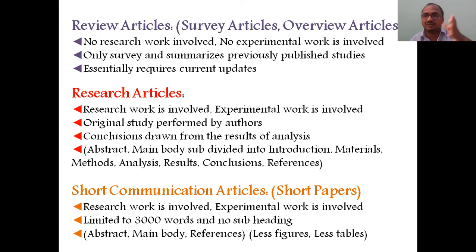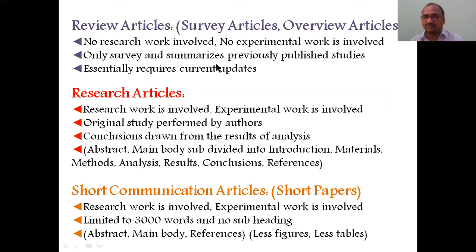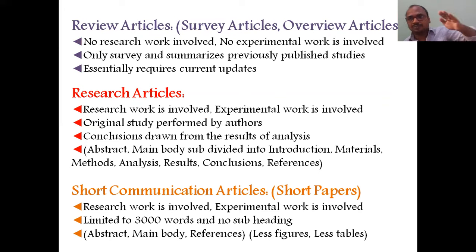For example, if you selected the formulation or manufacturing of liposomes, you write about improvements year by year — 2001, 2002, 2003 — noting any progress, percentage enhancement, or drug entrapment efficiency in liposomes. You do only a survey and summarize previously published studies. You write all the downloaded articles as references numbered one, two, three, and so on. You must include current updates, focusing on 2020–2021 publications while summing up the older work.